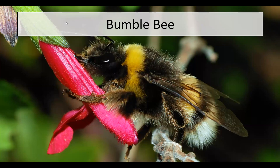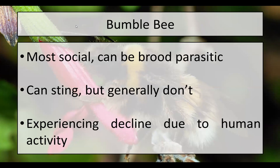Bumblebees do have a problem — they have a trait where they can be brood parasitic. They will lay their eggs in another bee's brood and force that bee to raise their young. This is also an insect that can sting, but they generally don't. You can hold a bumblebee in your hand and nine times out of ten it won't sting you. One thing to add: mason bees and bumblebees, while they can sting, most of them will actually keep their stinger. Our European honeybee will lose the stinger and die, but these bees can do it again.